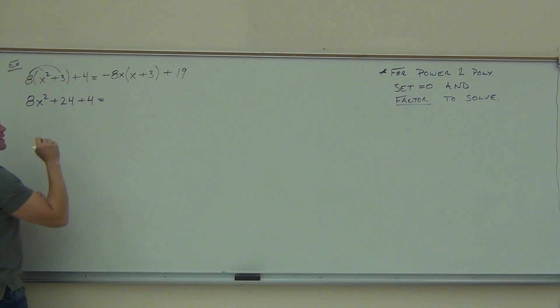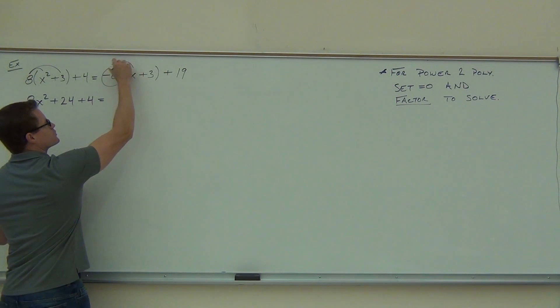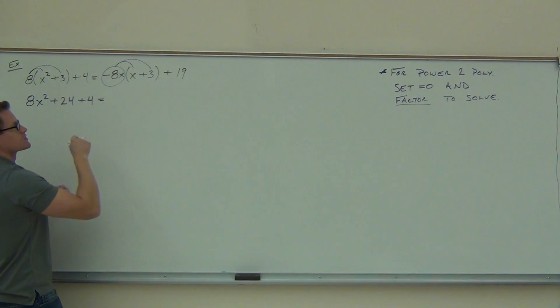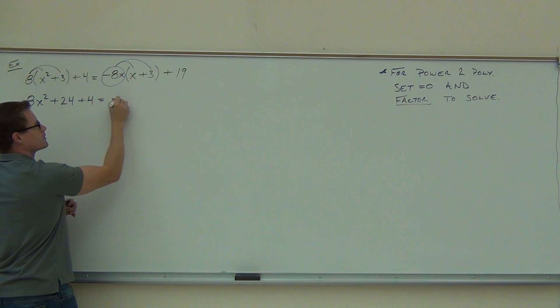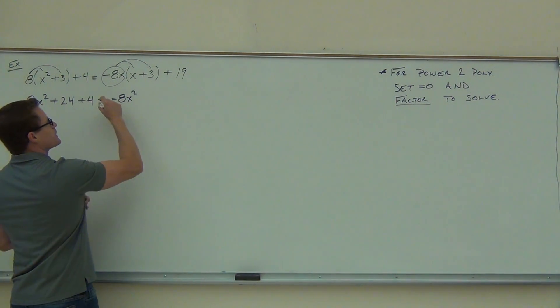On the right-hand side, remember that we're distributing negative 8x. I always like to circle that, that way I see it in my head. I kind of pictured it, took a mental picture. That helps me to distribute it exactly to both these terms and get it right. So negative 8x times x, what are we going to get out of that? Negative 8x². Yeah, exactly. Don't forget that x squared. That's important.